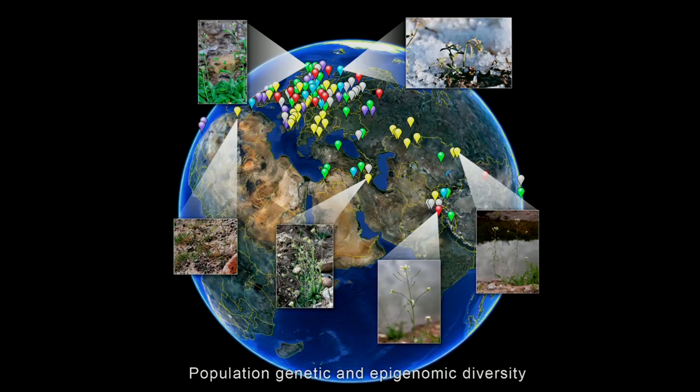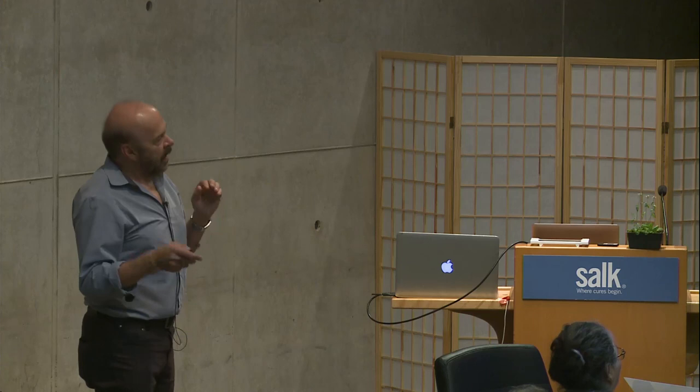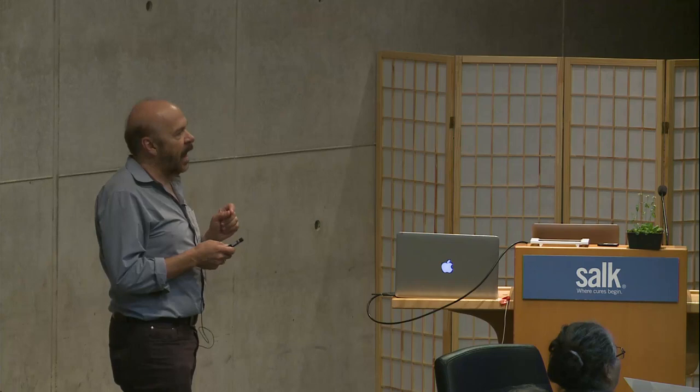Now we can go to that collection. There are 1,400 accessions that have been collected, cataloged with their GPS location, soil type, etc. We call this the Thousand and One Genomes Project — because the human project had a thousand genomes, so we had to do a thousand and one, just to beat our colleagues. We've sequenced the genomes of all of them; we know the genetic variation between them. Now any laboratory can carry out experiments and try to identify what are the genes or characteristics that allow those plants to grow in that environment.